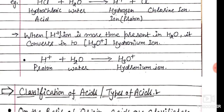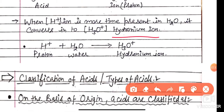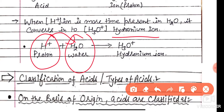When the H-positive ion is present in water for a longer time, it converts into a Hydronium ion. This unstable species is called the Hydronium ion, H₃O⁺. One H from H-positive and two H from water form H₃O⁺ with a positive charge.